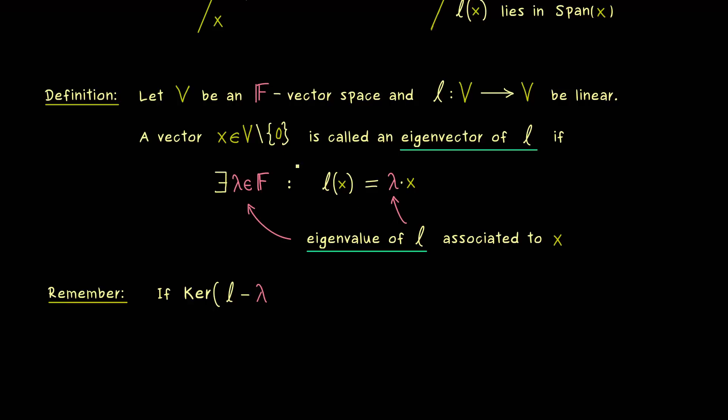In all cases we can just work with this important equation and bring lambda times x to the left hand side. And then we just have the linear map l minus lambda times the identity map on the left hand side.